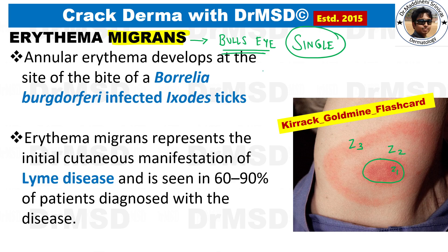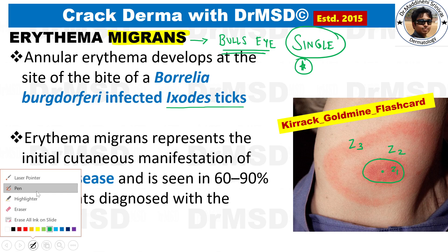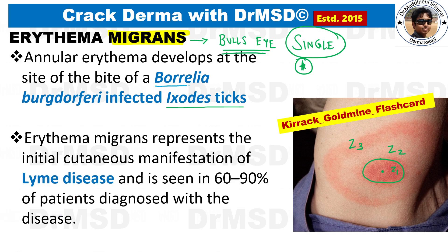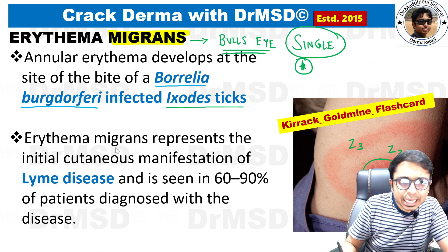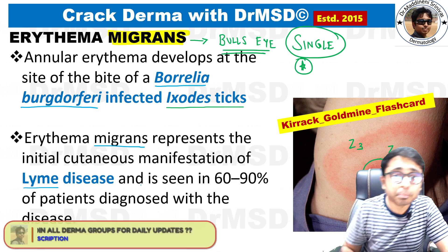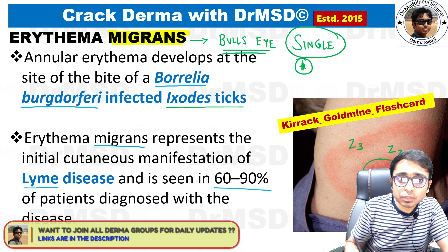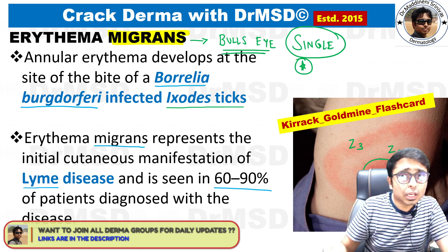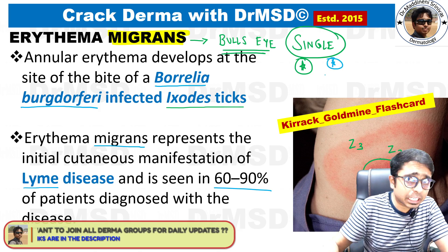The key difference is that in erythema migrans there is a single target lesion, and at the center — zone one — is the site where the Ixodes tick is present. The bite of this tick causes a Borrelia burgdorferi infection. Erythema migrans represents the initial cutaneous manifestation of Lyme's disease and is seen in 60 to 90 percent of patients diagnosed with Lyme's disease. So whenever we see a single target or bull's eye lesion, the diagnosis is erythema migrans.